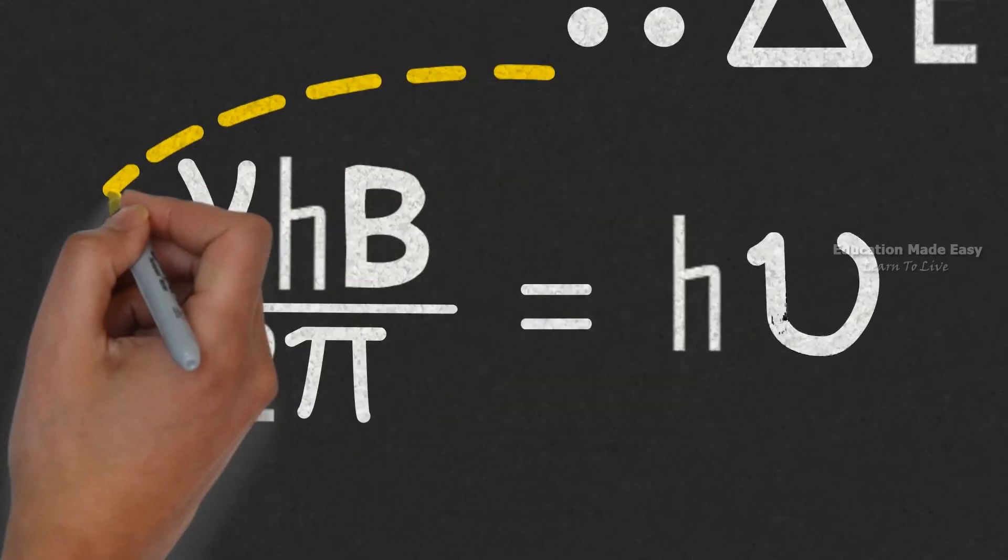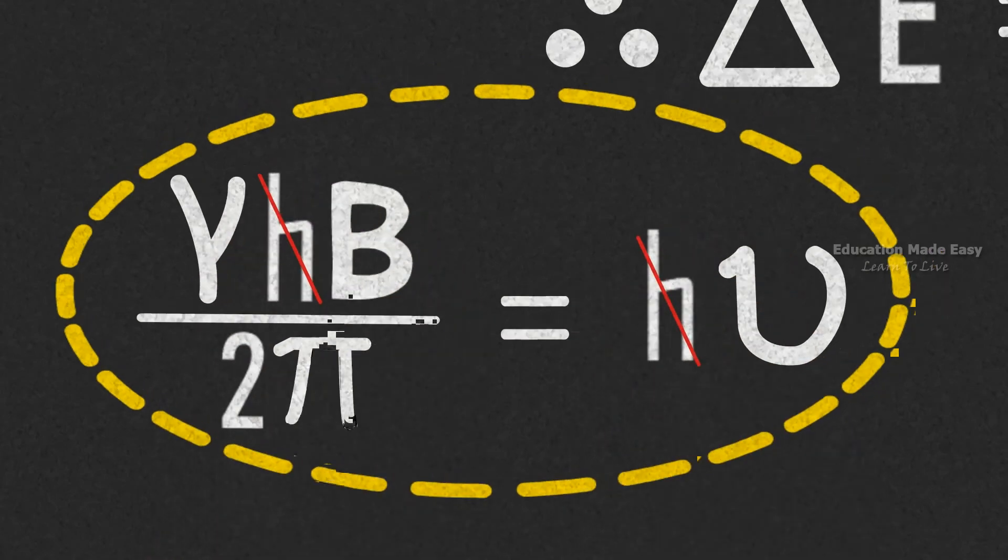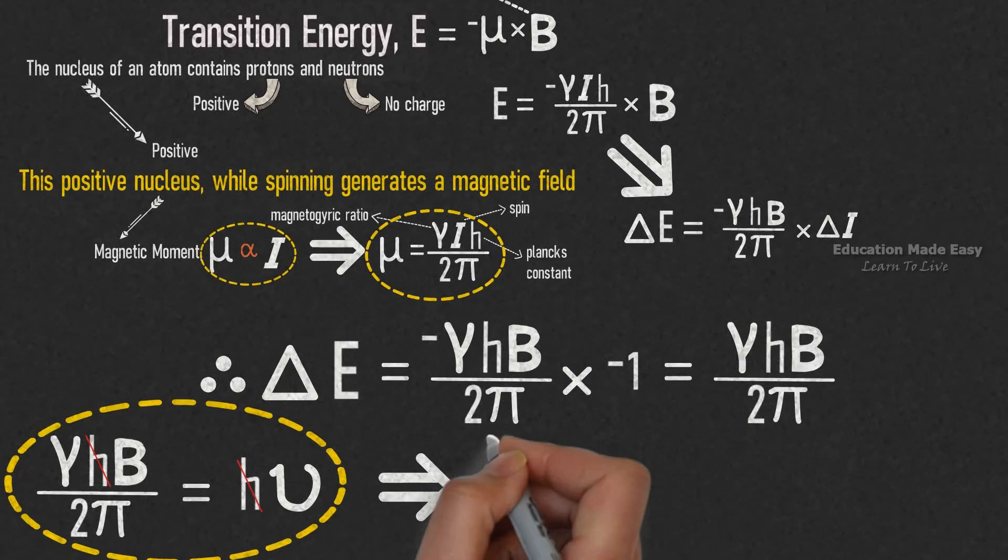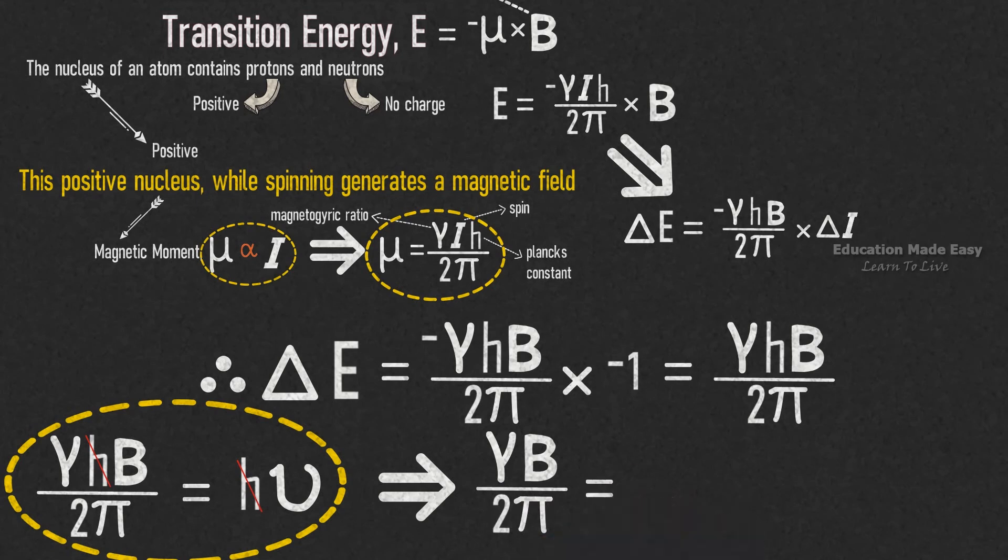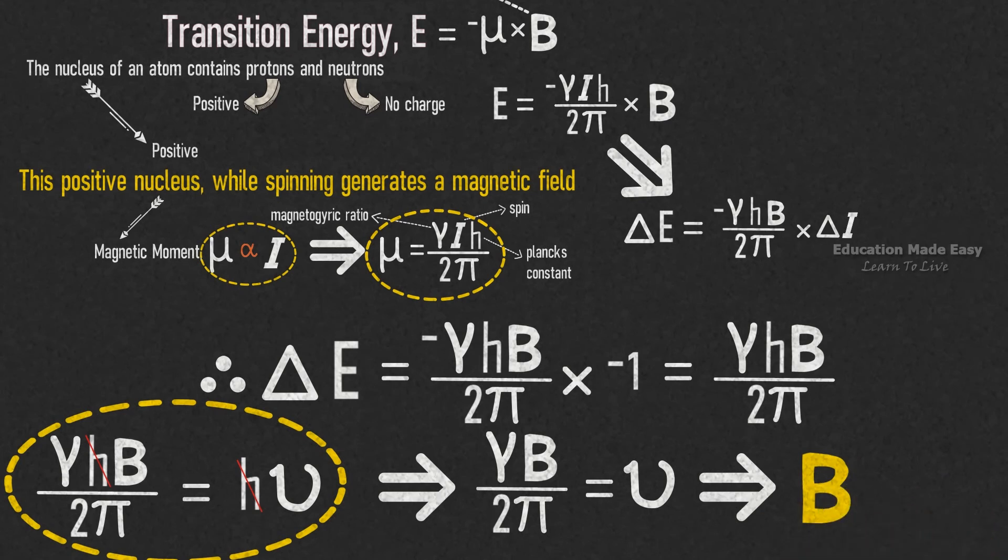From this equation, we can cancel the Planck's constant h from both sides. So the equation becomes γB divided by 2π is equal to ν. From this, we can understand B is directly proportional to ν. This is the relation between field strength and frequency.